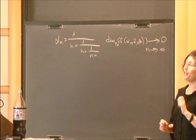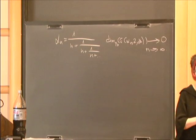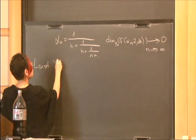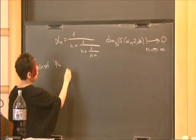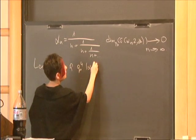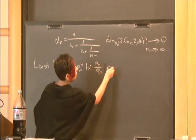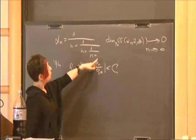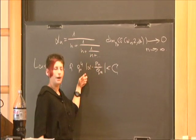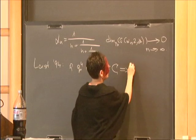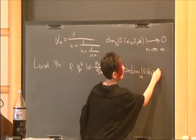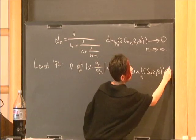However, the only rigorous result that we are aware of is due to Last from 1994, in which it proved that if q_n to the fourth times |α - p_n/q_n| is smaller than some constant, where p_n/q_n is some sequence of rationals that converges to α, then the Hausdorff dimension of the critical Almost-Mathieu operator is smaller than or equal to half.